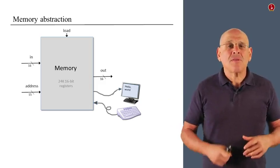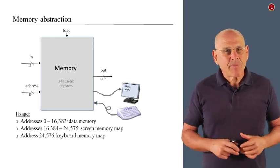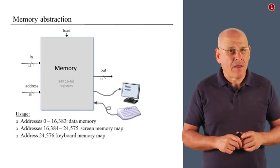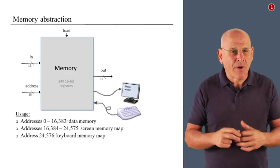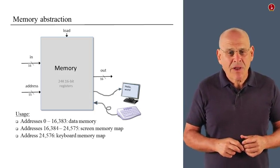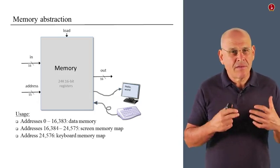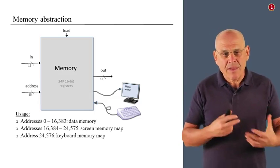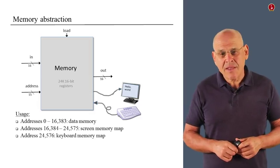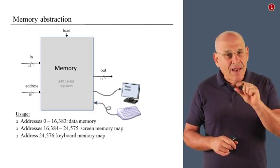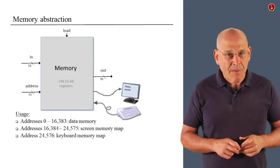Now, the overall address space of the Hack memory consists of three logical segments. There's no physical separation, but there's a logical separation. So the first 16K of the memory are dedicated to the running program and the data that it generates. The next 8K of the memory are dedicated to a screen memory map. And the last register in the memory represents the keyboard memory map.